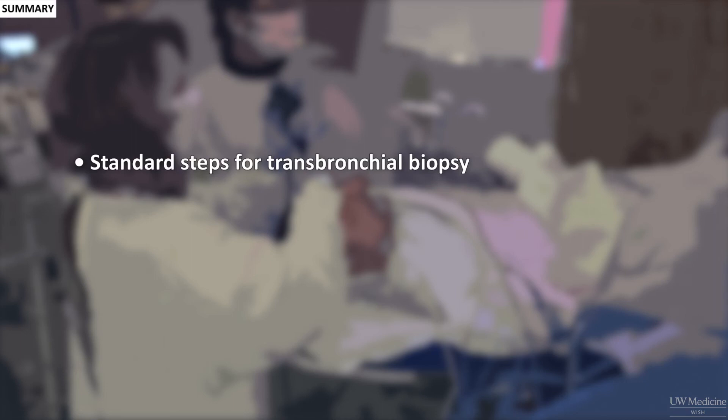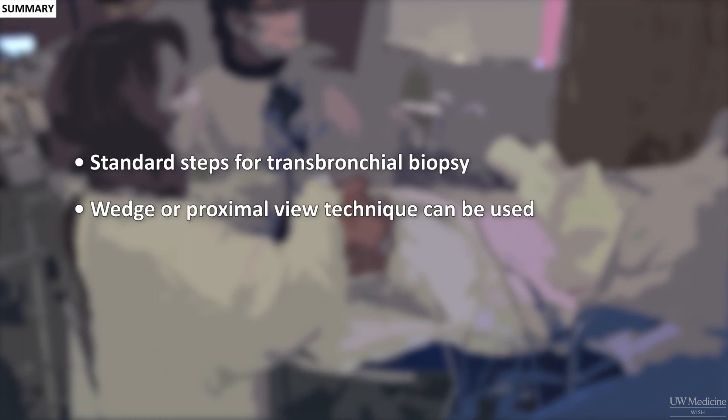To summarise this module, we have reviewed the steps performed when taking transbronchial biopsies. With practice, these steps become second nature. The decision to wedge or remain in a proximal viewing position may be determined by anatomy or by provider preference, and it is worth becoming familiar with both techniques. The diagnostic yield from transbronchial biopsy improves with increasing sample numbers. We recommend taking at least 6 samples in all situations, and 10 to 12 if evaluating for acute lung transplant rejection.